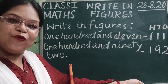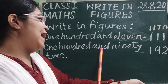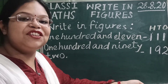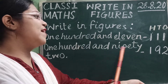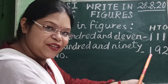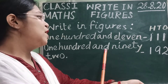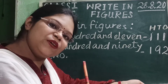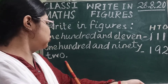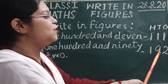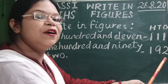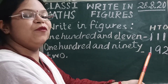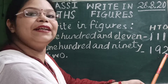Now children, let us move to the next one. So children, we have written 192. 100 means the digit in 100's place is 1. We have again written 1 under the 100's place. And we read the digit in 10's and 1's place together, so it is 92. We have written 92 under the 10's and 1's column. So 192, we read and we write in figures as 192.